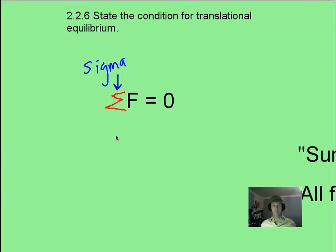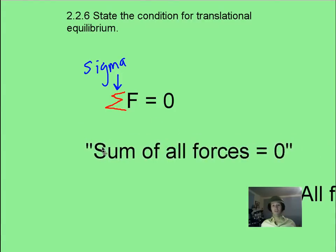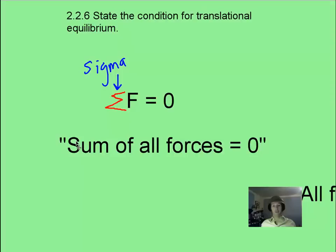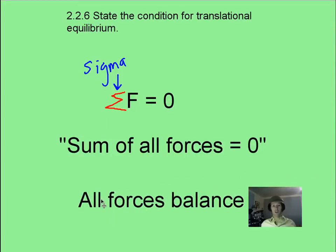Translational equilibrium is actually not too complicated. It's when you have the sigma F equals zero equation, which means all your forces equal up to zero — or you could think of it as all your forces balance. This becomes pretty key for solving some free-body diagram problems, which we'll try right now.